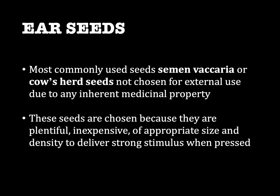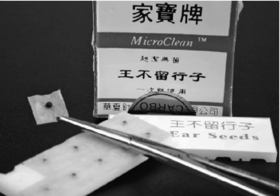In contemporary China, ear seeds are the standard way in which much auriculotherapy is administered for virtually every treatable condition. The most commonly used seeds — the semen vacaria, or cow's herb seeds — are not chosen for external use due to any inherent medicinal property. These seeds are chosen because they are plentiful, inexpensive, and of appropriate size and density to deliver a strong stimulus when pressed. Sterilized semen vacaria seeds attached to adhesives, or ear plasters, are commercially available for ease of administration.